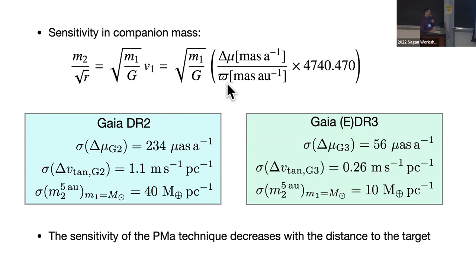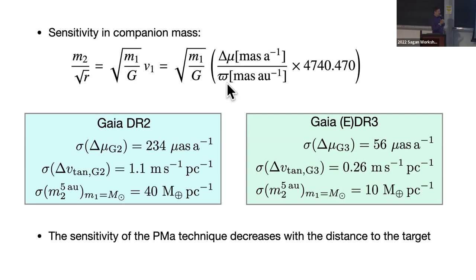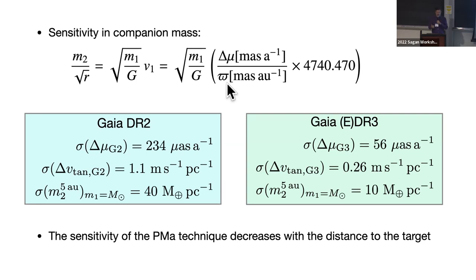Focusing on Gaia DR3: the median accuracy on Hipparcos stars is 56 microarcseconds per year. Expressed differently, that translates to 26 centimeters per second per parsec of distance. So a star at one parsec — you measure this proper motion anomaly with an accuracy of 26 centimeters per second. At 10 parsecs, it's 2.6 meters per second.